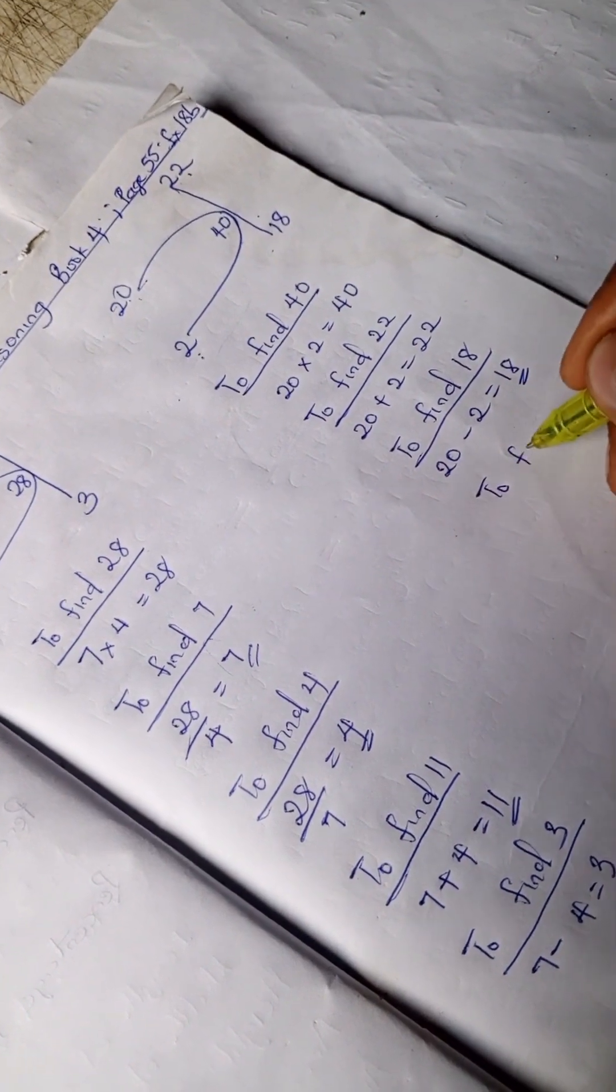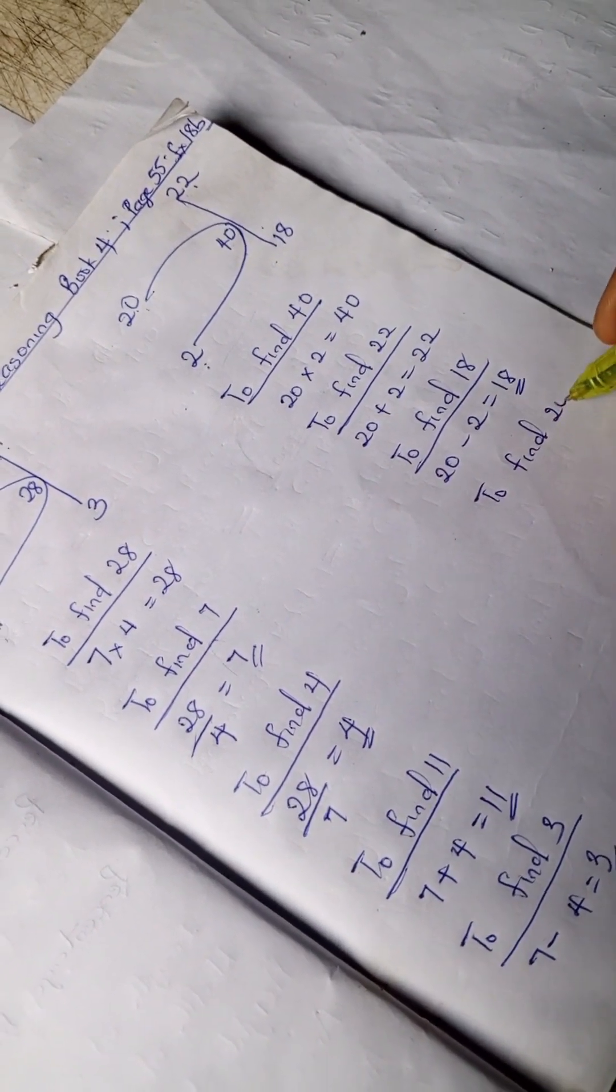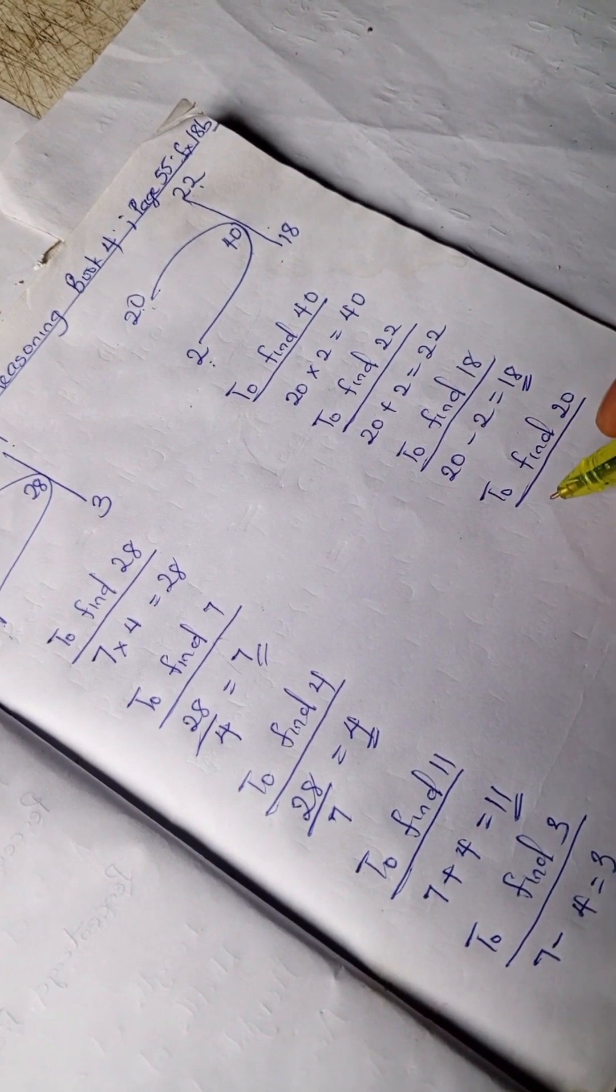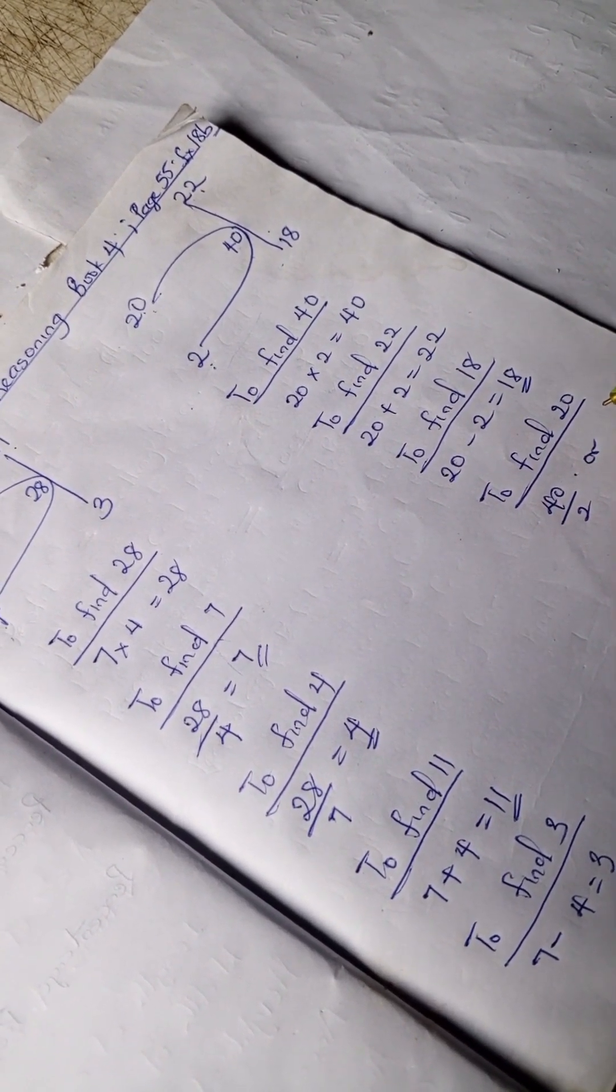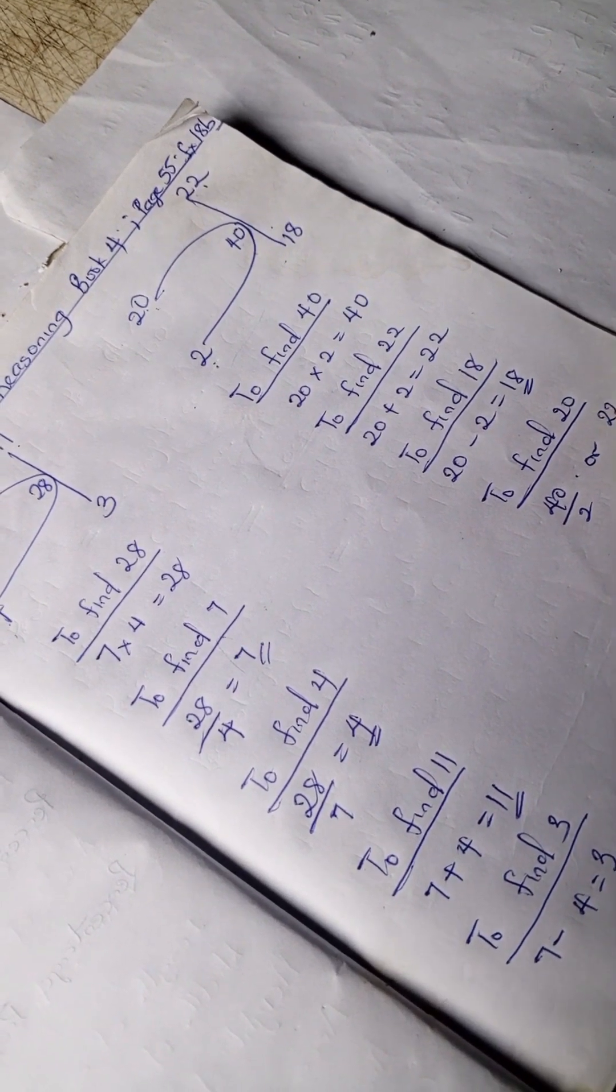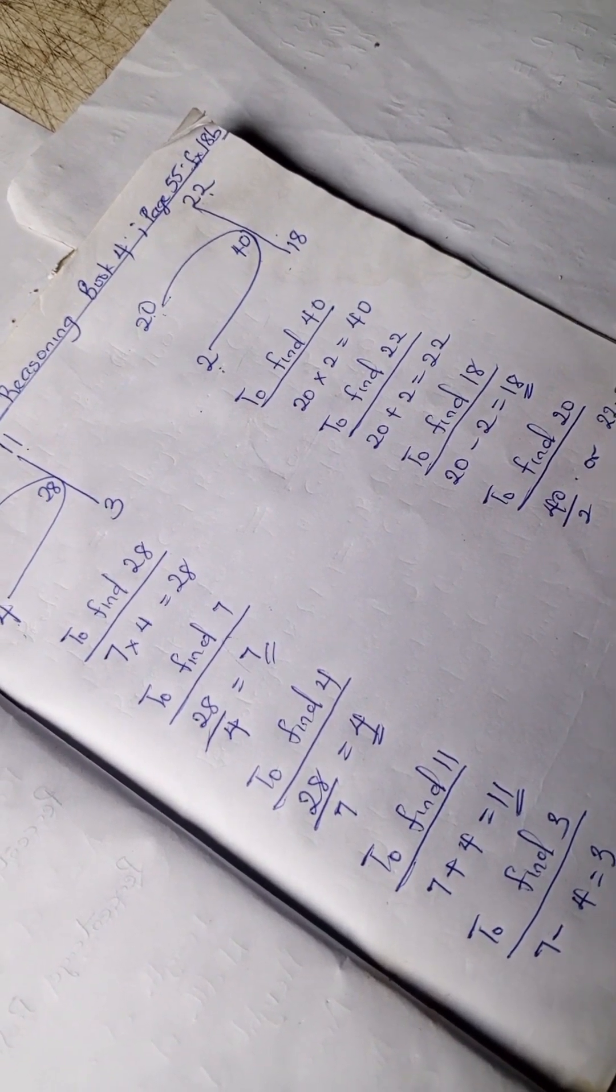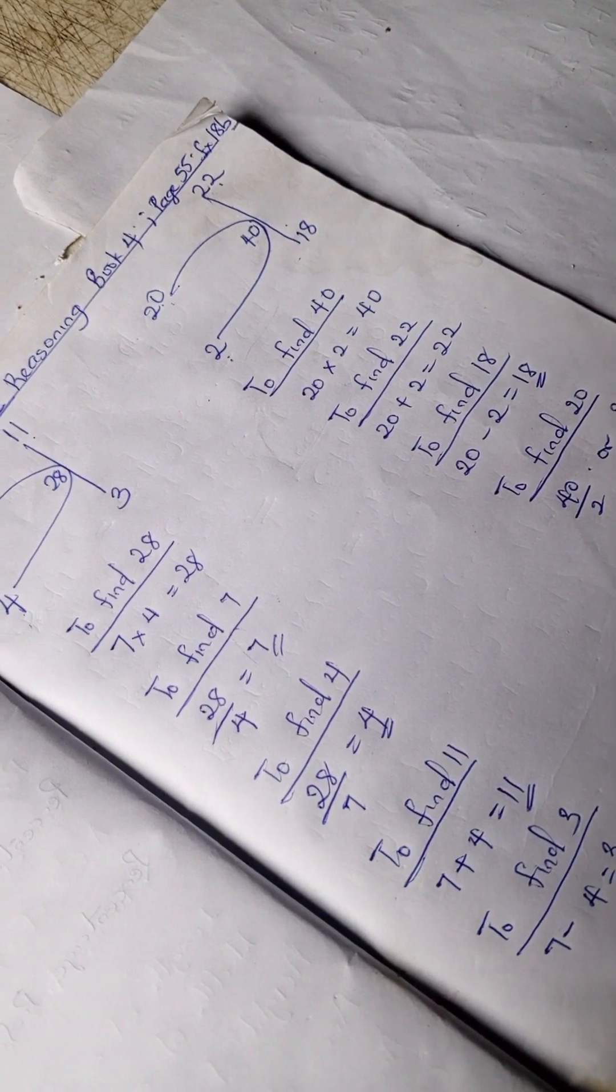So to find 20, we can say 40 divided by 2, or we can also say 22 minus 2, you get 20.